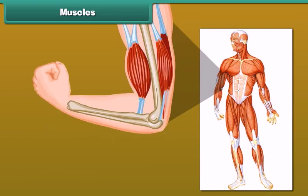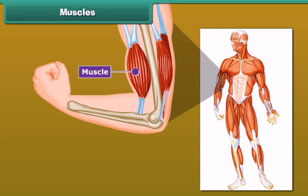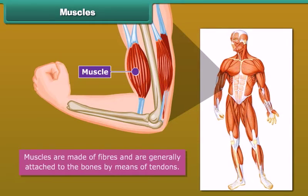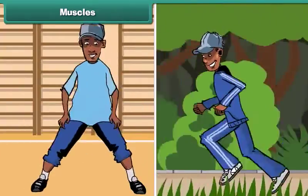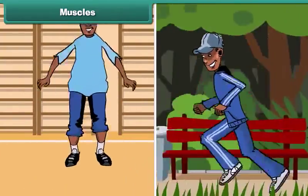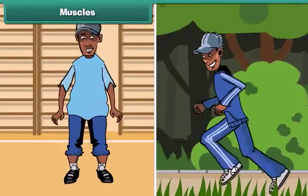Friends, make a tight fist and bend your arm at the elbow. Feel your upper arm — it feels harder. This is called the biceps. The biceps are muscles. There are about 600 muscles present in an adult human body. Muscles are made of fibers and are generally attached to the bones by means of tendons. Muscles along with bones help to give shape to the body and help the different parts of the body to make movements.